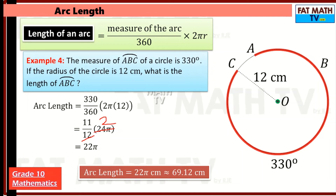To get that, put 22 times π into your calculator and round to two decimal places.